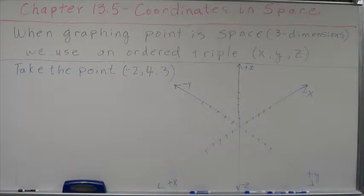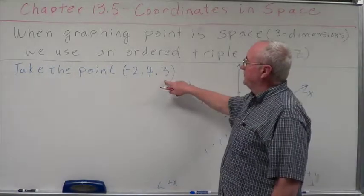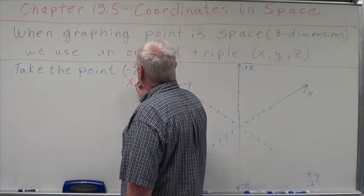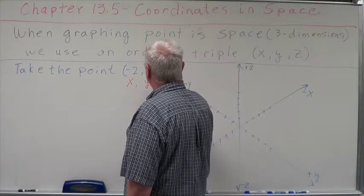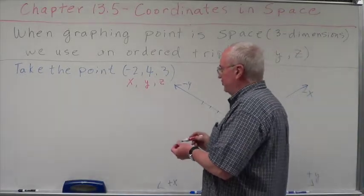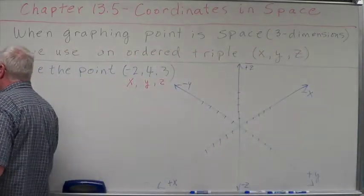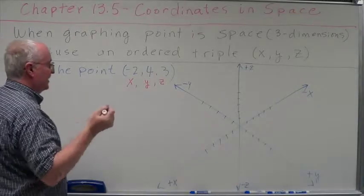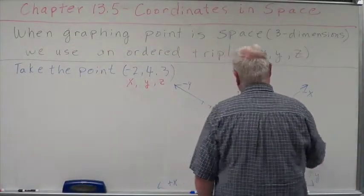This is how you would take isometric dot paper and turn it into three-dimensional graph paper. Notice what I do, what it looks like. So that's what I'm going to do here. So we're going to take the point negative 2, 4, and 3. This is our x, this is our y, and this is our z. So we're going to take a negative 2x, a positive 4y, and a positive 3z.